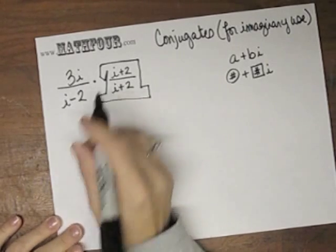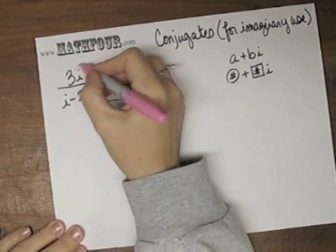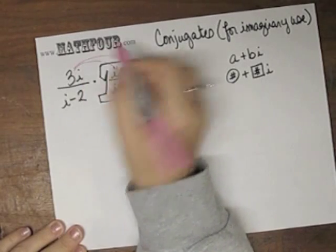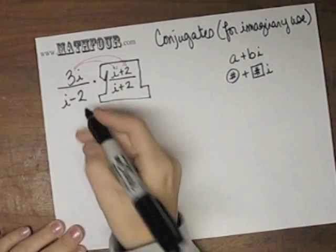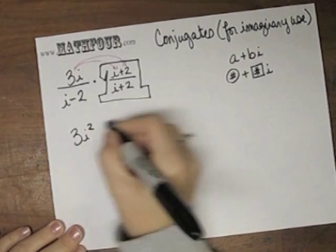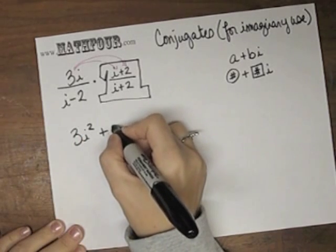So now I have to do the arithmetic. So I need to distribute this guy, 3i. So I have 3i squared plus 6i.